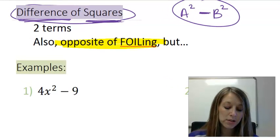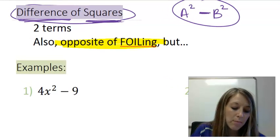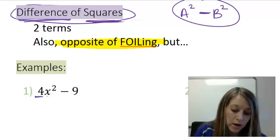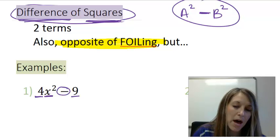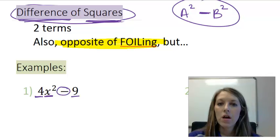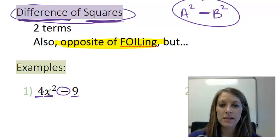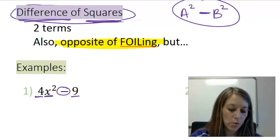Is this a difference of squares? I notice it has two terms, but let me see. 4 is a square. X squared is a square. 9 is a square. So that fits the format. And my operation is subtraction. So I have confirmed that this is, in fact, a difference of squares.